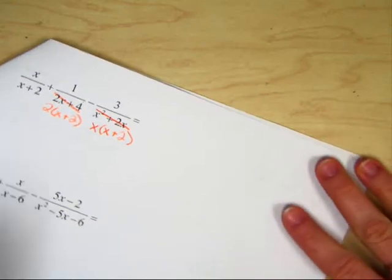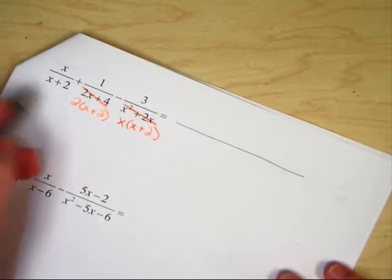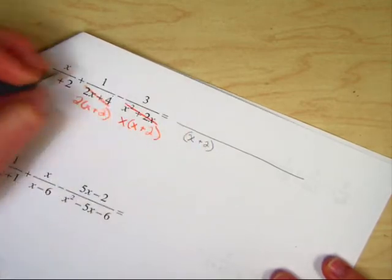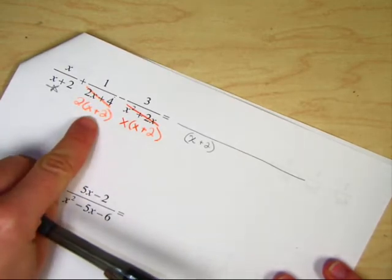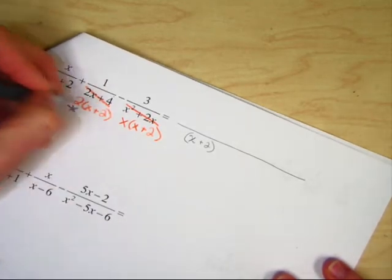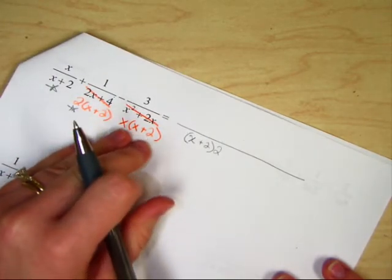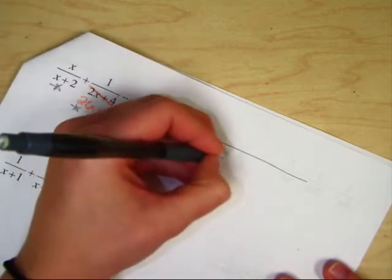Now we move on to find our common denominator. Our common denominator is made up of the first x plus 2. We bring this over. Now what does this one add? It adds a 2, right? Good. Now what does this one add that we don't have? An x. So I bring it over.